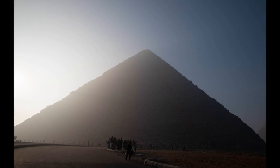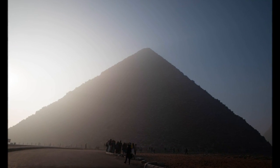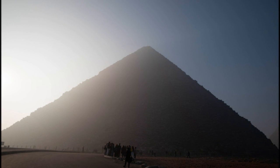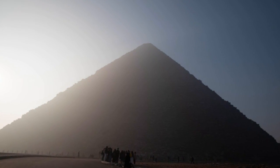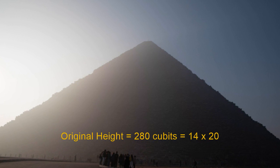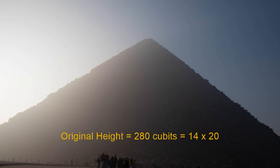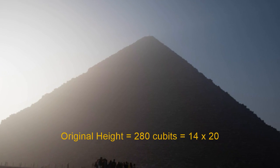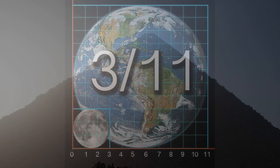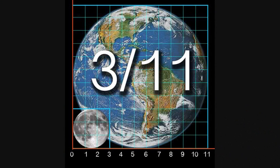So what other information might be encoded in the dimensions of the Great Pyramid? The height of the pyramid, as I mentioned before, was originally 280 cubits, which is a multiple of 14. Why 14? Remember 3 and 11? Well, added, they make 14.